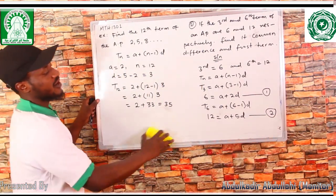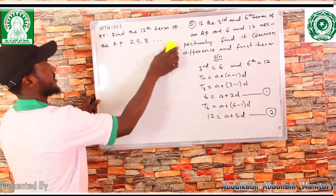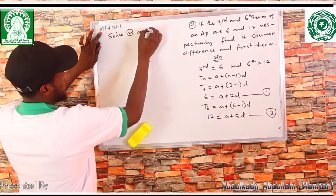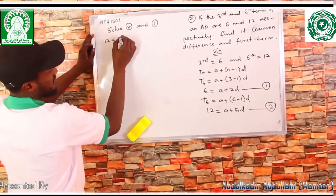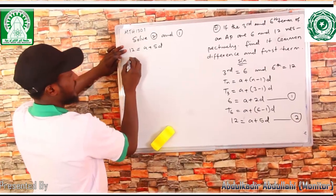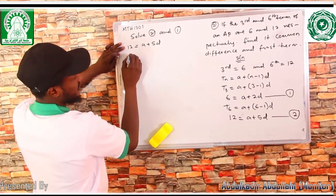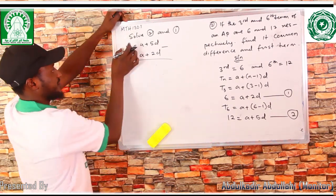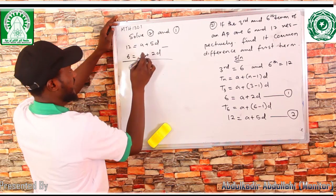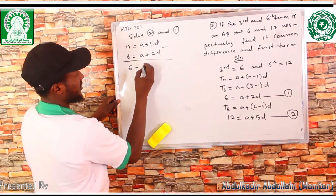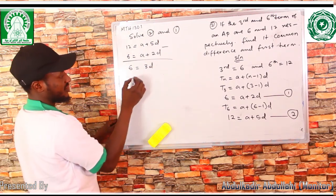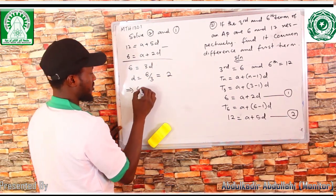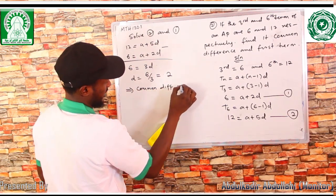We solve equations one and two simultaneously. Subtracting equation one from equation two: 12 - 6 = (A + 5D) - (A + 2D), giving 6 = 3D. Dividing both sides by 3, D = 2. This means the common difference is two.